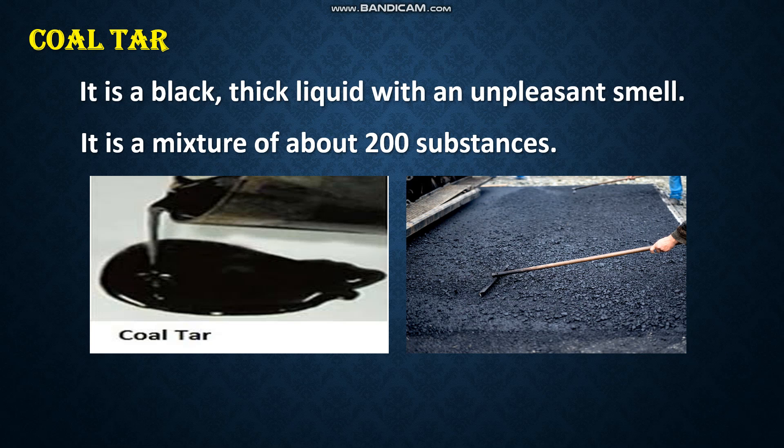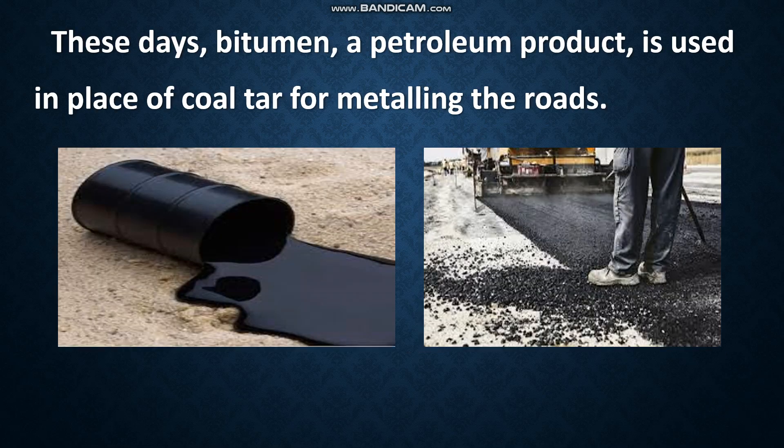Next, let us see what is coal tar — also one of the products we get from coal. It is a black thick liquid with an unpleasant smell. It is a mixture of about 200 substances. Have you seen surfacing of a road, that is the metaling of the road? For that we used to use coal tar. But nowadays, bitumen — a petroleum product — is used in place of coal tar for metaling the roads.